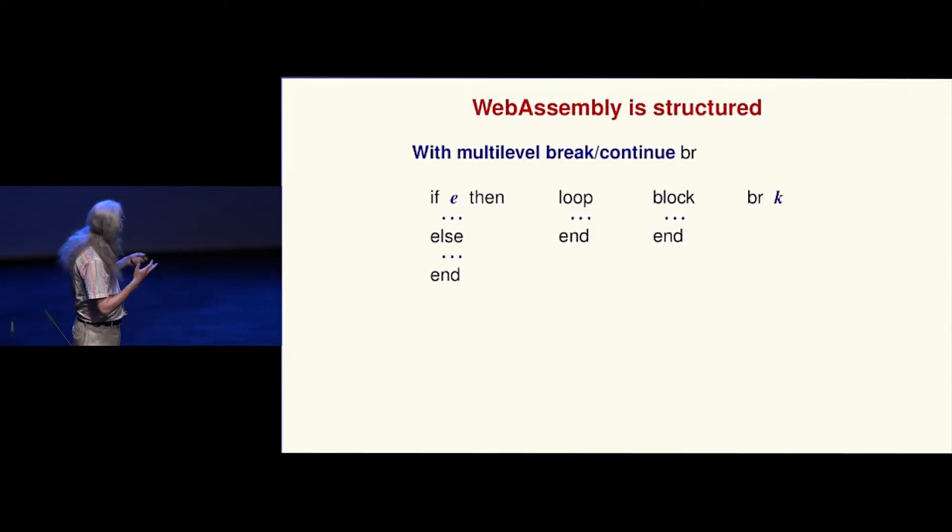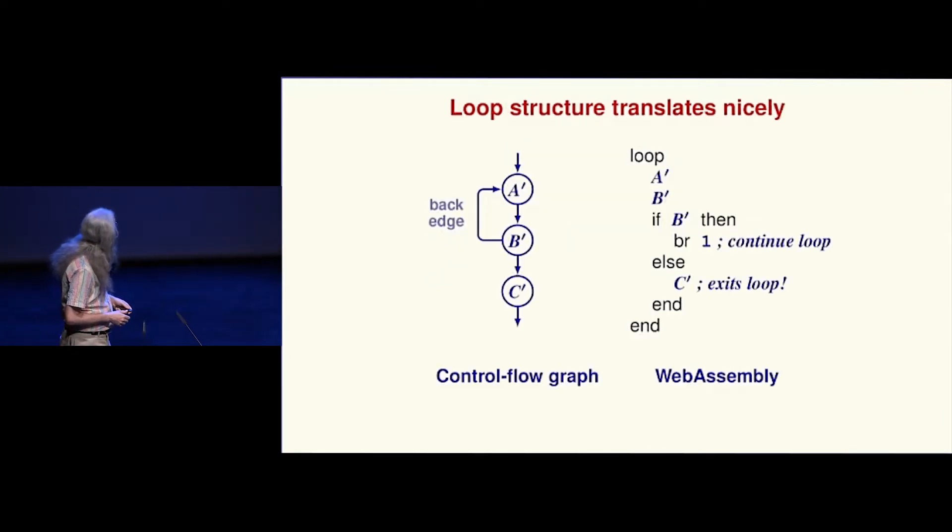And then we've got a block form that exists only to be exited from. Here's our control flow that says reach outward k times to whatever you're nested in, and if you're reaching out to a loop go to the beginning, anything else go past the end.